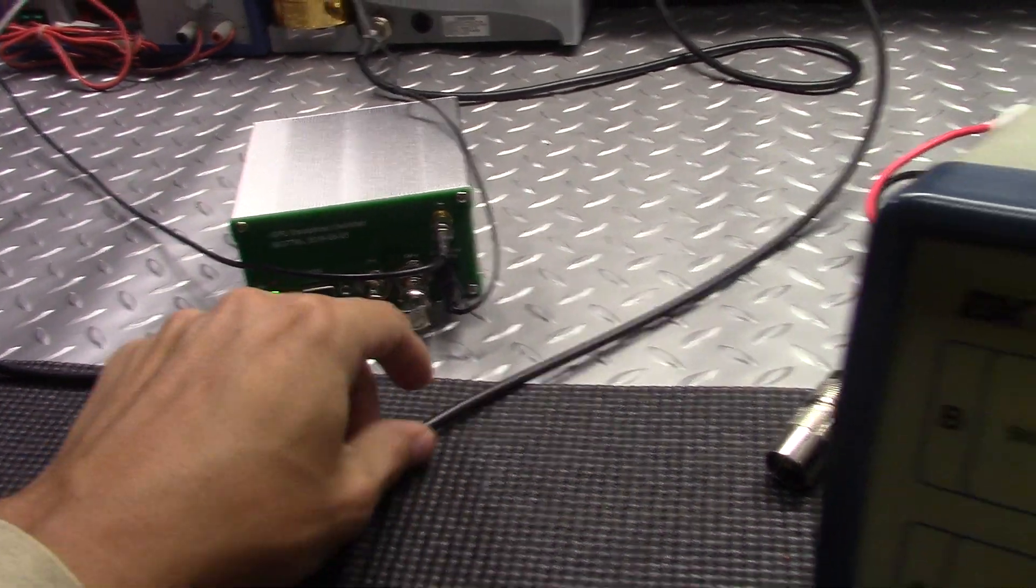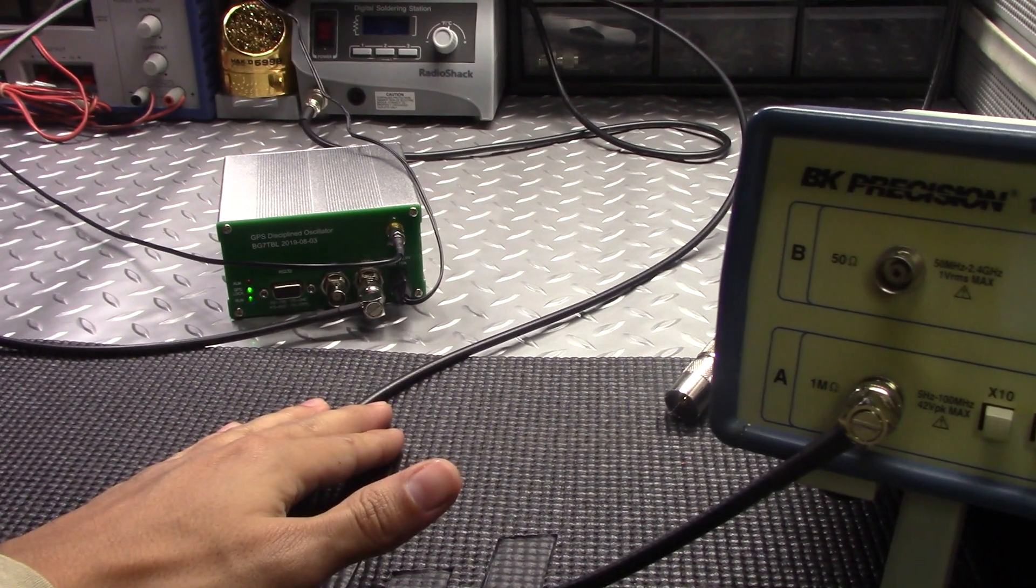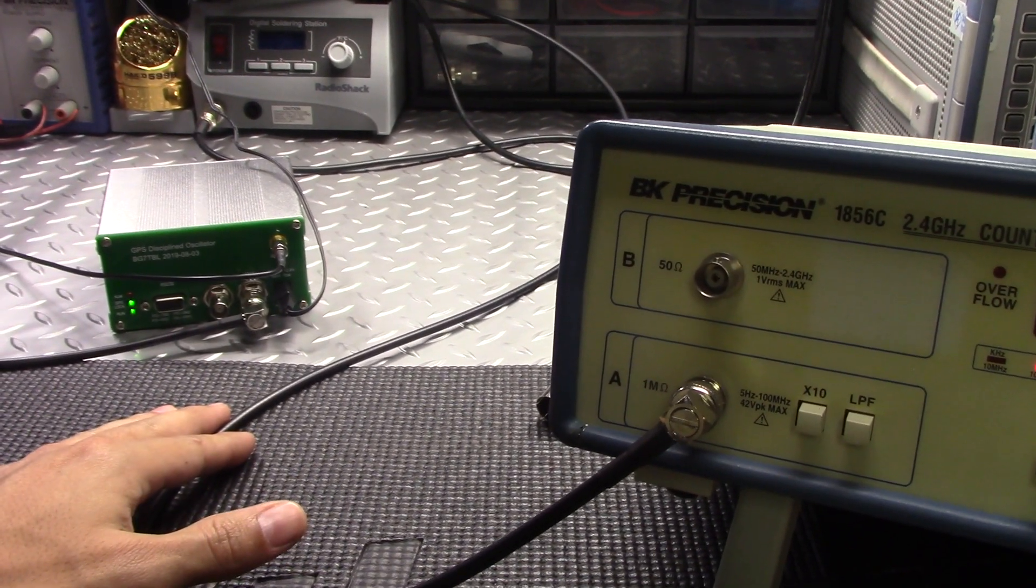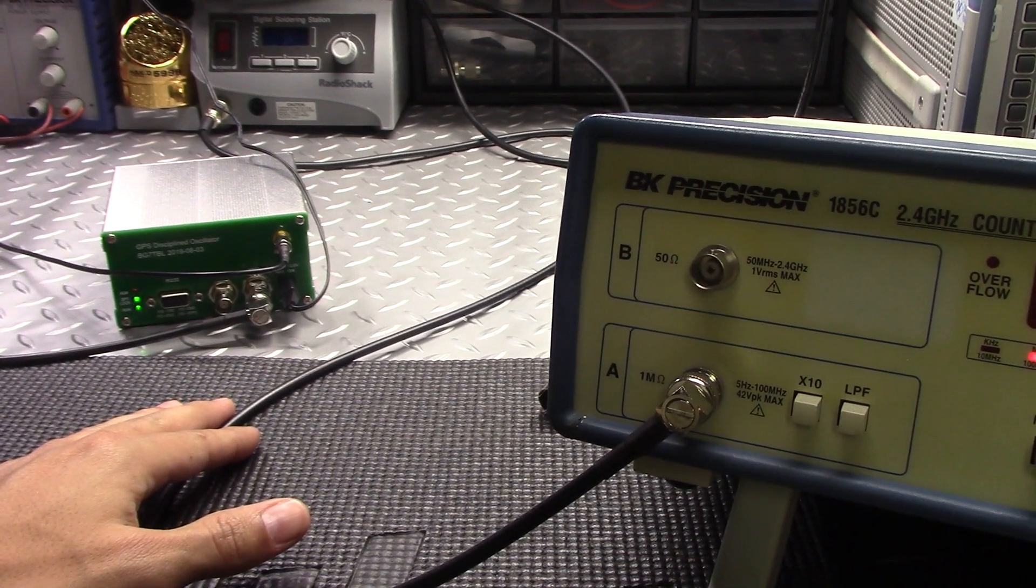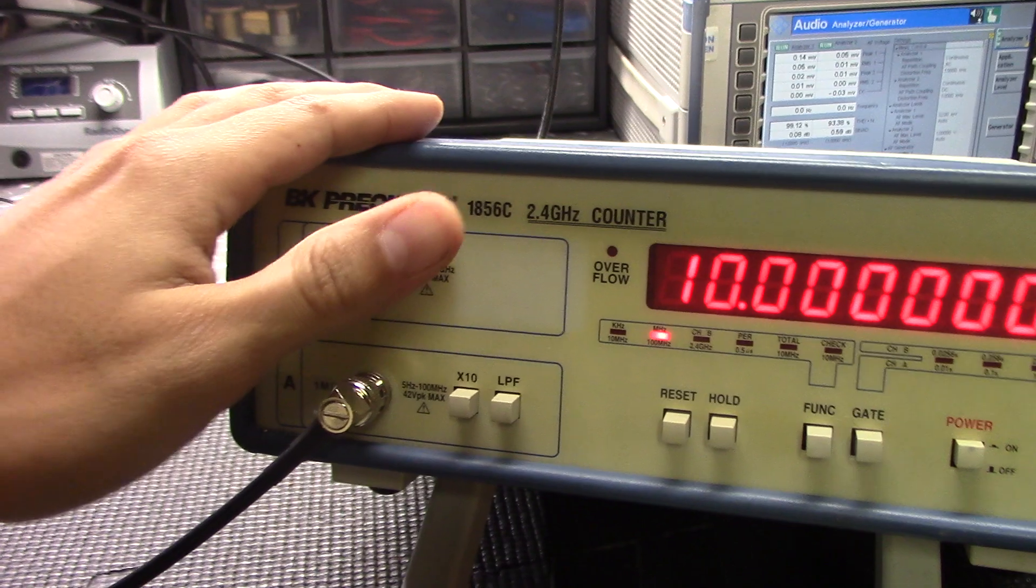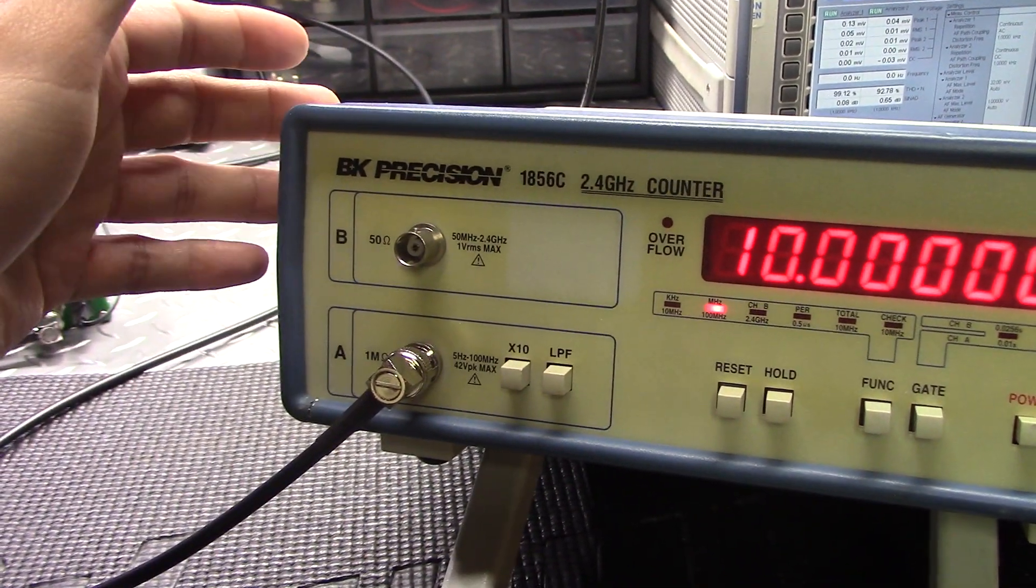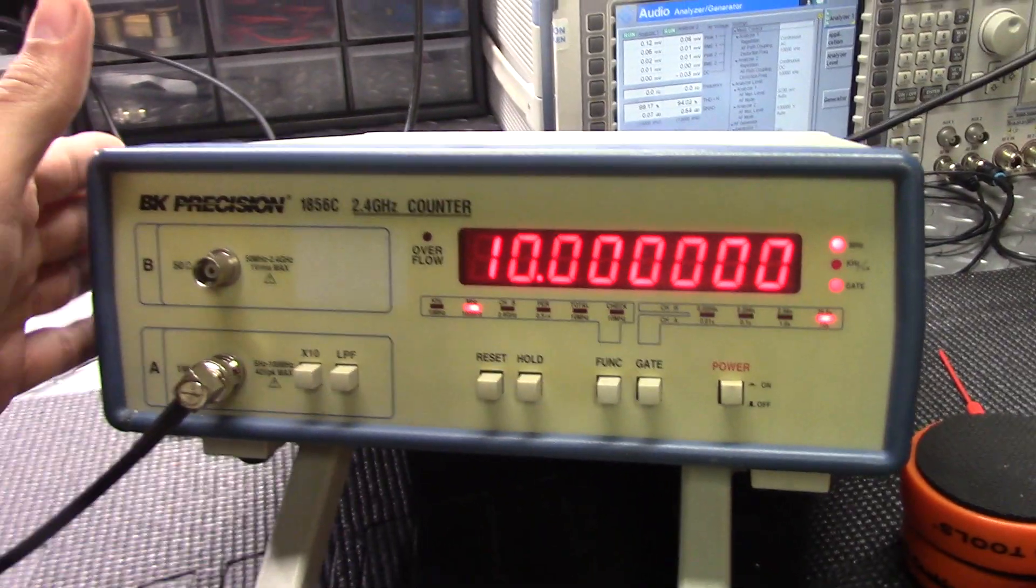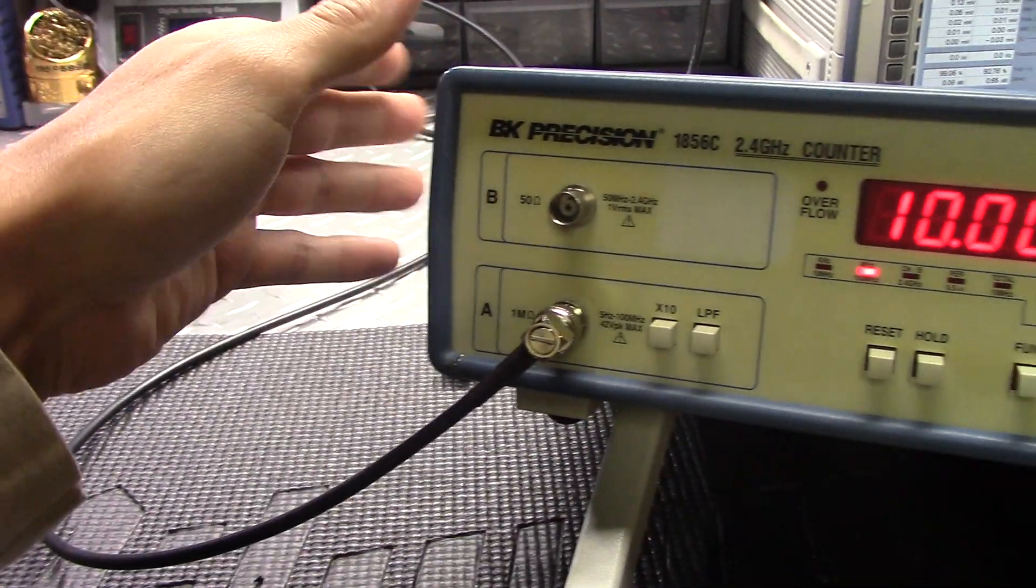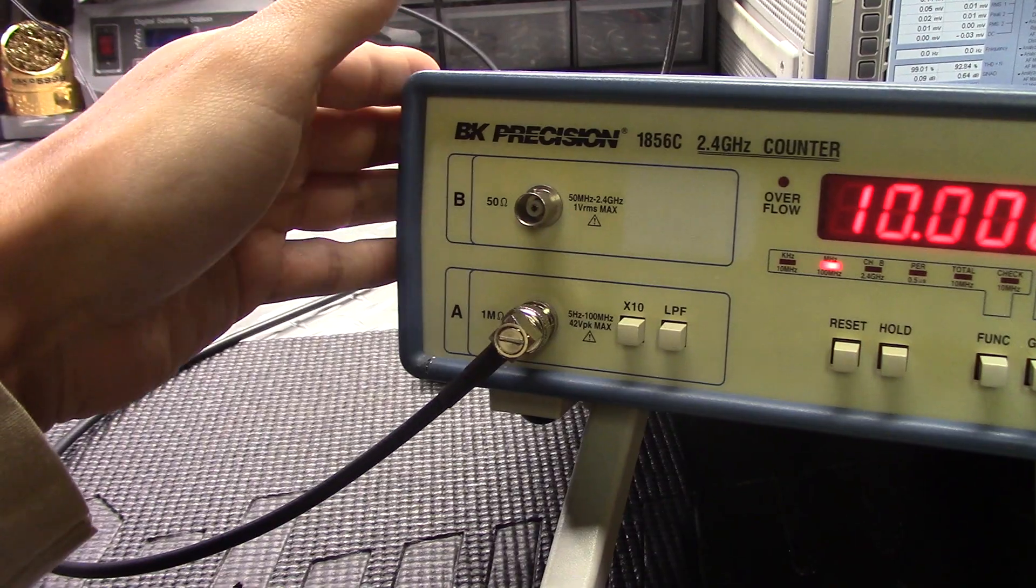It comes in real handy for checking frequency counters. If you're doing alignments on CB radios, you're going to need a good solid reference. Either you got to have a frequency counter that's recently calibrated, or you got to have something that you can line up your frequency counter with, like a known accurate reference, like a GPS disciplined oscillator or rubidium oscillator.